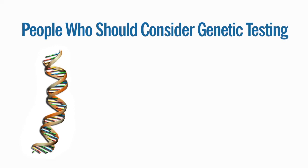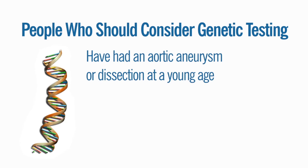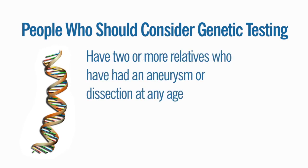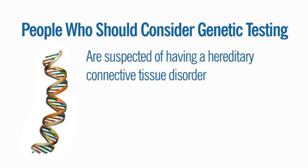People who should consider genetic testing include those who have had an aortic aneurysm or dissection at a young age, have had several aneurysms or dissections, have two or more relatives who have had an aneurysm or dissection at any age, or are suspected of having a hereditary connective tissue disorder.